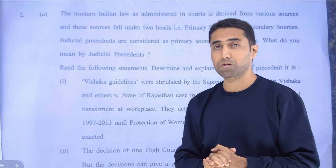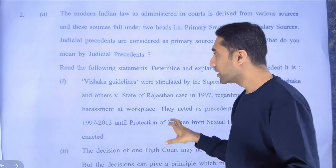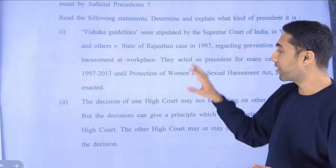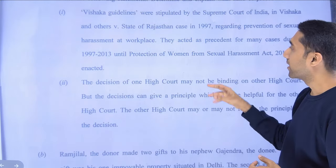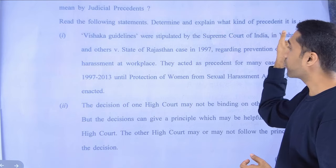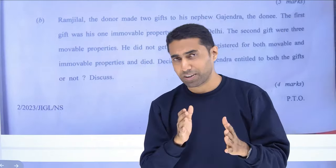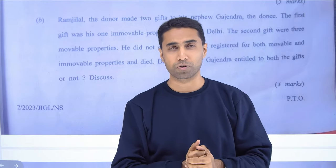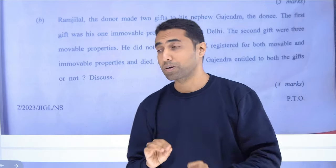The next question is about judicial precedents. Judicial precedents is a very basic concept in JIGL. They have asked the concept in a five-marks question — first asking what is a judicial precedent, then giving you two scenarios and asking you to determine and explain what kind of precedent it is. That is application of mind. So you should read it and write what kind it is. This gives you an idea of what to expect in the other law papers as well.